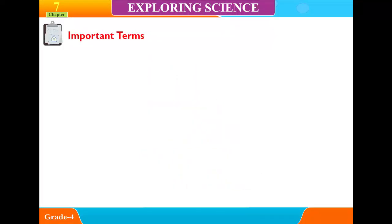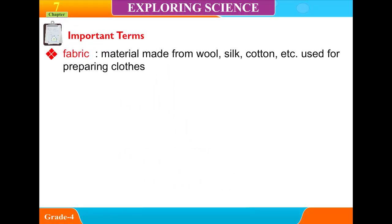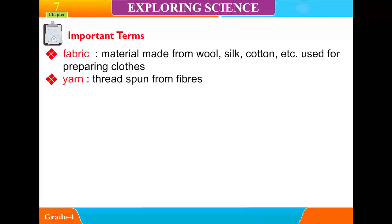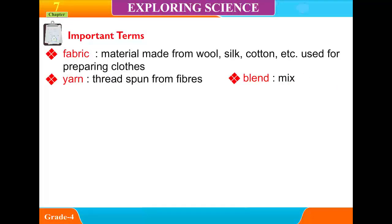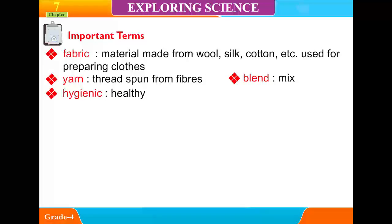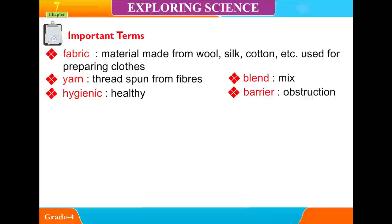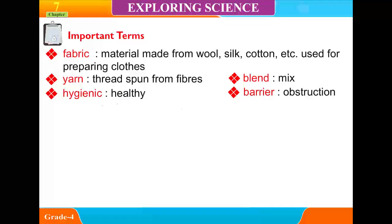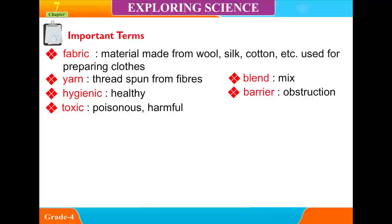Important Terms. Fabric: material made from wool, silk, cotton, etc., used for preparing clothes. Yarn: thread spun from fibers. Blend: mix. Hygienic: healthy. Barrier: obstruction. Toxic: poisonous. Harmful.